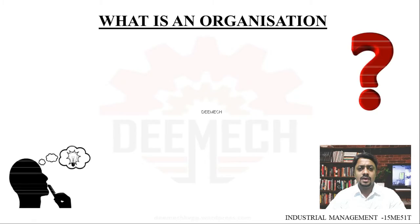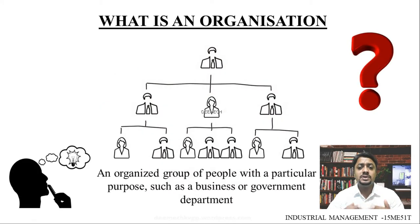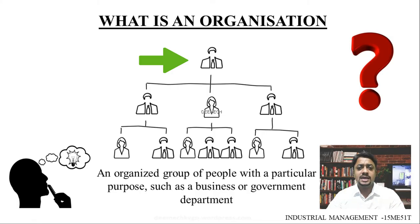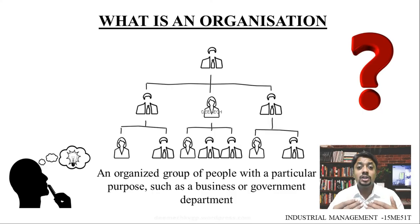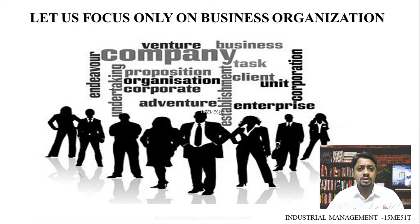An organization is defined as an organized group of people with a particular purpose, such as a business or a government department. At the top we have an authority — generally the manager — then various department heads, under whom team members work. The boss of the organization is the authority and all staff have a reporting authority or a superior. Since we are engineers, let us focus only on business organizations.